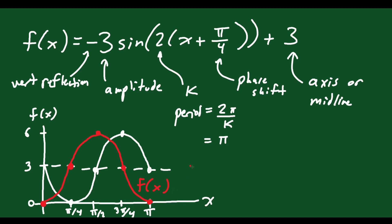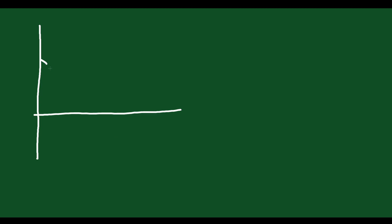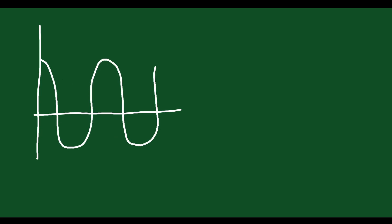So that's just a quick review of how we graph these functions, especially now that we have radians instead of degrees. Now let's say you're given some graphs, and the question is: determine a sinusoidal equation for this graph. I'm going to draw one out here quickly — it goes down, then up, then down, then back up.